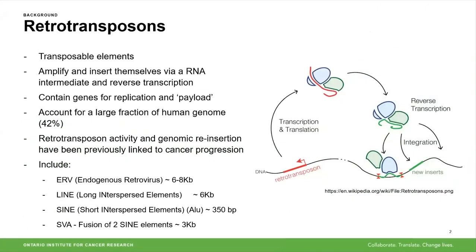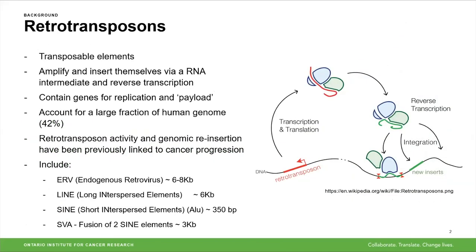A bit of background about retrotransposons. Retrotransposons are transposable elements that can amplify and insert themselves via an RNA intermediate and reverse transcription. They contain genes for replication and payload, and they account for a fairly large fraction of the human genome, about 42%. Retrotransposon activity and their genomic reinsertion has previously been linked to cancer progression. Retrotransposons include different classes such as ERVs, LINEs, SINEs, and SVAs, ranging in length from about 300 to 8,000 base pairs.